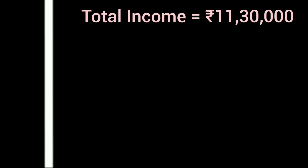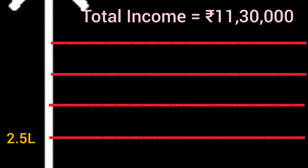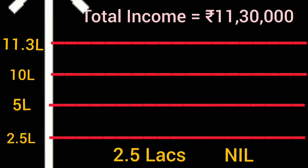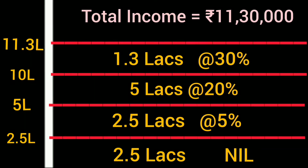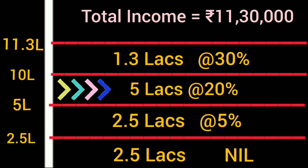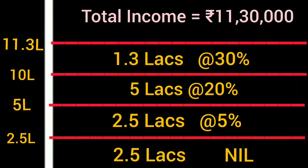Let's assume your total income is Rs. 11,30,000. We will calculate the tax slab-wise. On the first Rs. 2,50,000 there is nil taxation. From Rs. 2,50,000 to Rs. 5,00,000 — that is Rs. 2,50,000 — you pay 5%. From Rs. 5,00,000 to Rs. 10,00,000 — that is Rs. 5,00,000 — you pay 20%. I keep repeating this because a lot of people get confused and think the 20% applies to the full Rs. 10 lakhs. But here slab rate is followed — the total income is divided into portions and each slab is taxed separately.